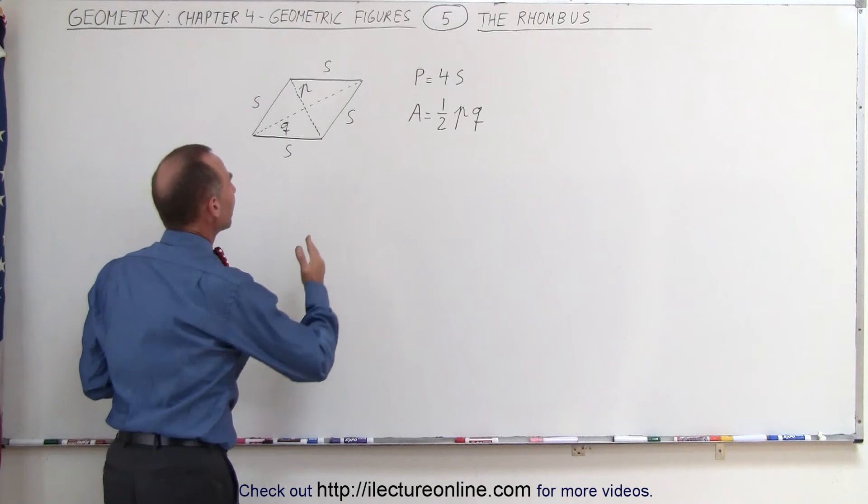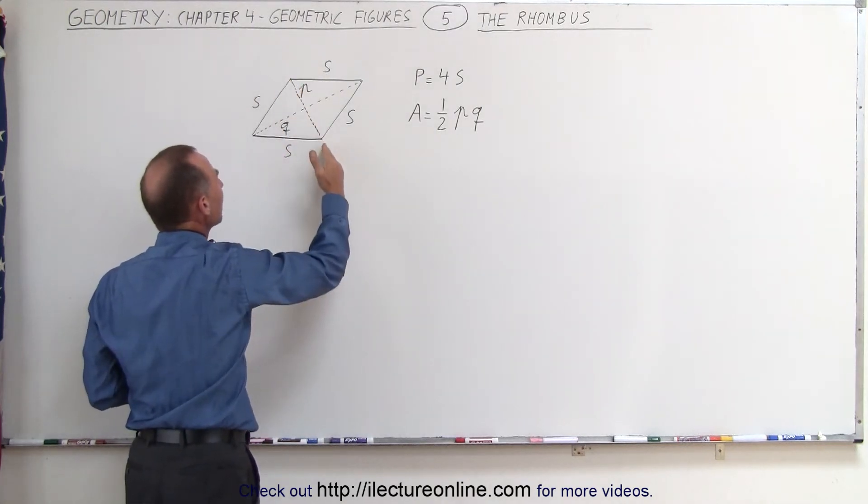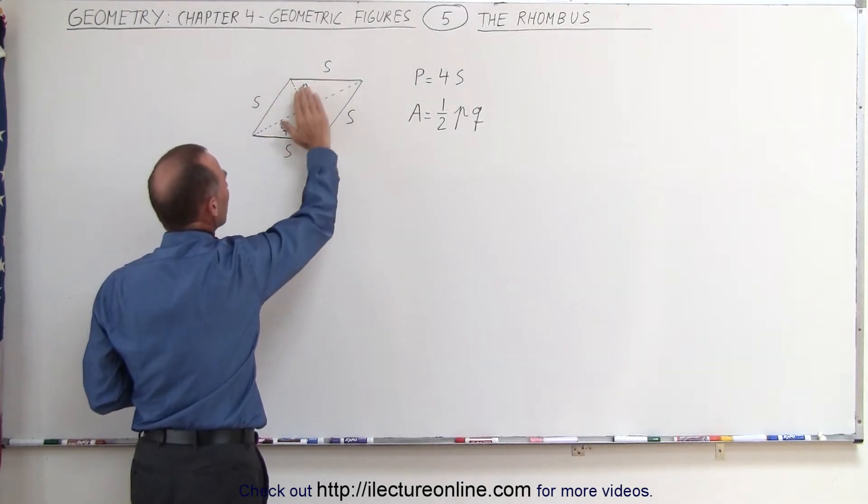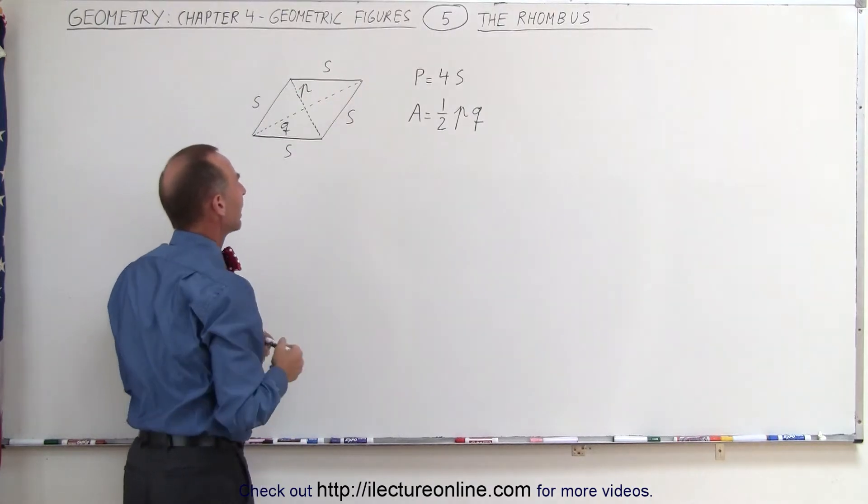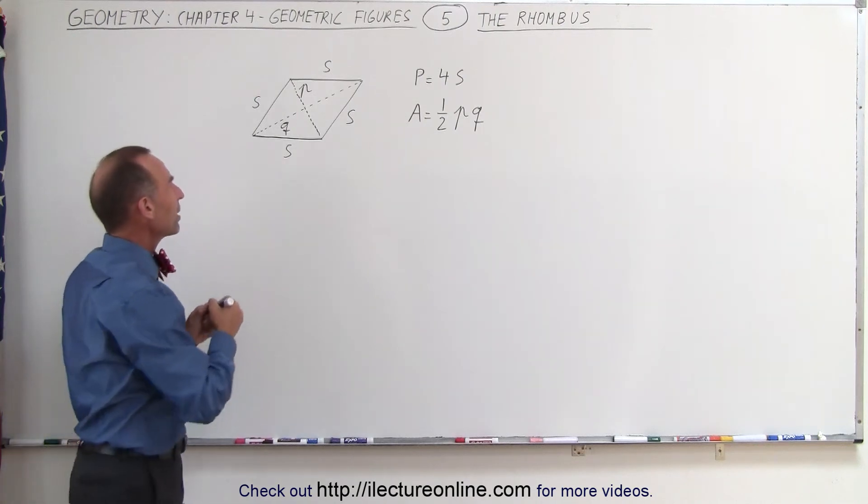Well, imagine that the diagonal P divides the rhombus into two equal triangles. This triangle right here and this triangle right here. And let's find the area of each of the two triangles.